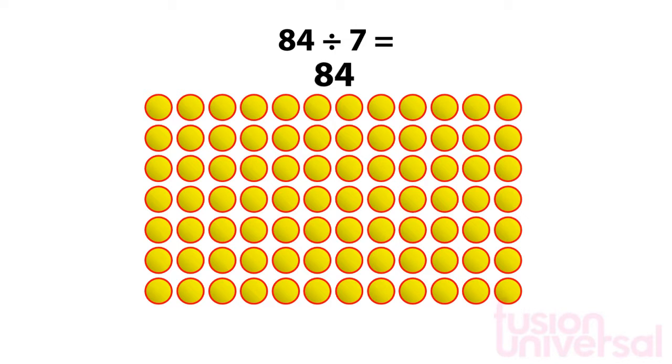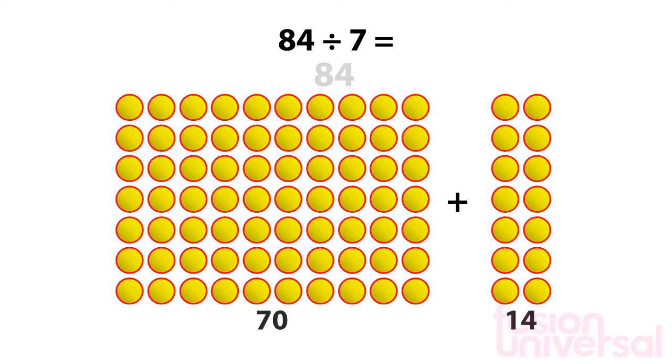Here we have 84 circles organized into 7 rows. We can split this up into a group of 70 circles and a group of 14 circles.